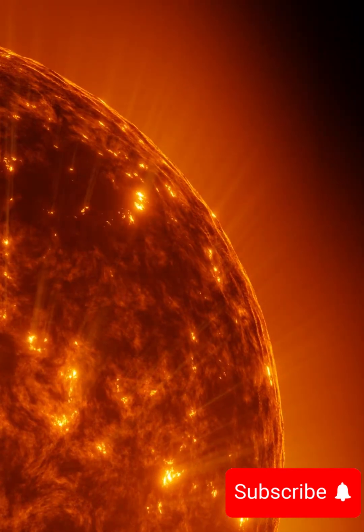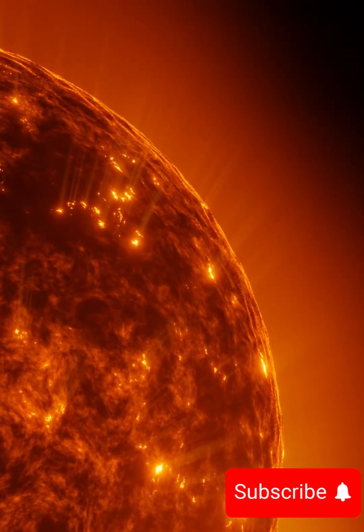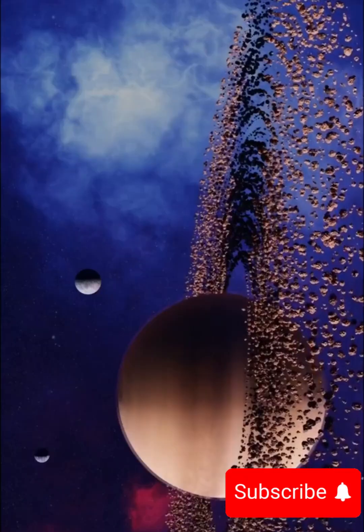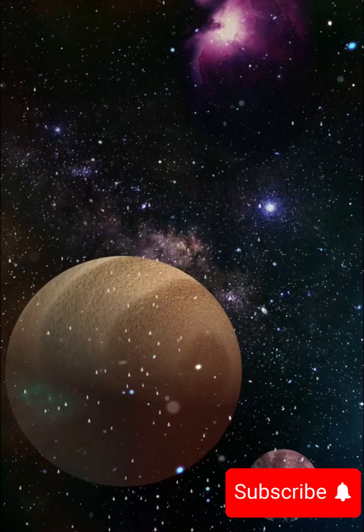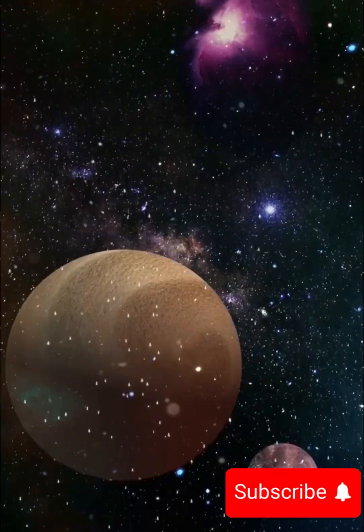Most planets absorb light. Earth reflects only 30%. But this world reflects 80% of everything that hits it, making it shinier than Venus.